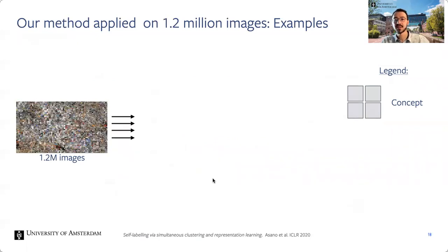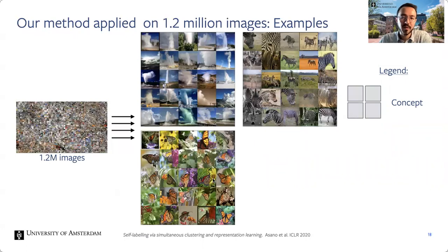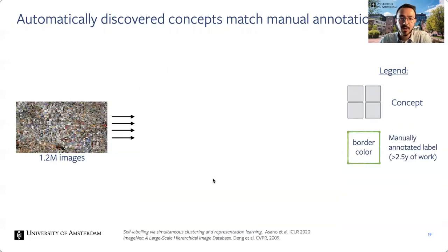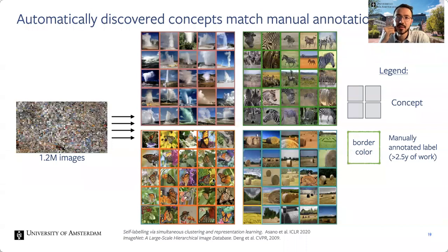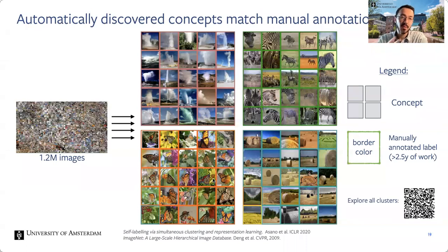When we apply our method on ImageNet it discovers visual concepts — for example, the concept of a geyser, a zebra, a monarch butterfly, and a bale of hay. Since ImageNet does have manual annotations, we can compare against them by drawing the border color of each image in the color representing the manual annotation. We find that we are in fact quite close to the manual annotations without having used any of them. Even the clusters which are not as pure in terms of ImageNet classes are easy to make sense of.